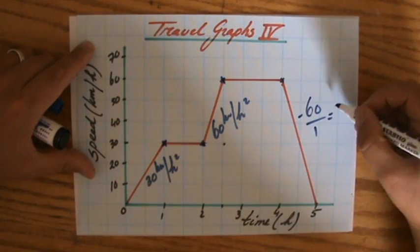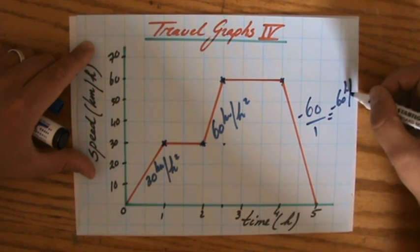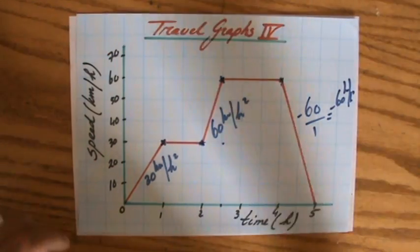It is minus 60 kilometers per hour squared.